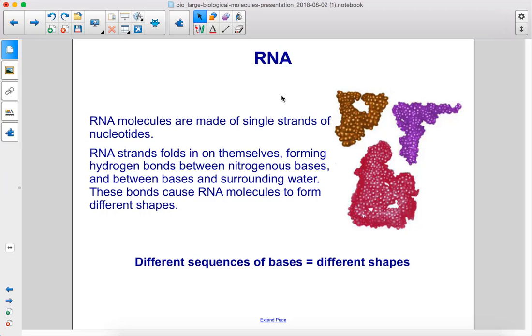RNA molecules are made of single strands of nucleotides. RNA strands fold in on themselves, forming hydrogen bonds between nitrogenous bases and between bases in surrounding water. These bonds cause RNA molecules to form different shapes. Different sequences of bases equal different shapes.